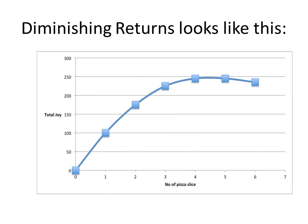Here's a clip I snagged off the internet with a graph showing what diminishing returns to utility looks like. You'll see total joy on the y-axis and the number of slices of pizza on the x-axis — so it's the total amount of joy you get with respect to the number of slices of pizza. The joy figures are arbitrary and will differ from person to person, but no matter who you are, the overall shape of the curve is still going to pretty much be the same.